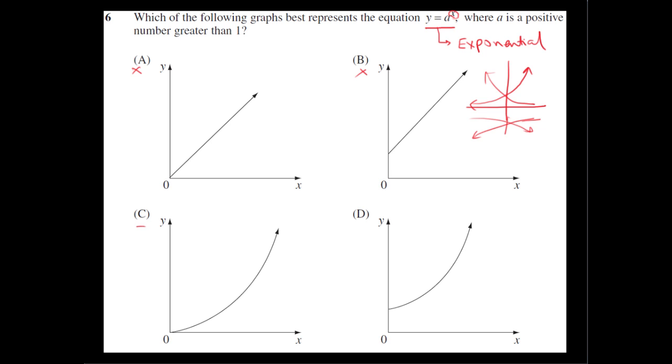So now we're left with c and d. If you look at the difference between c and d, you find that d has a non-zero y-intercept, whereas c has a y-intercept as being the origin.